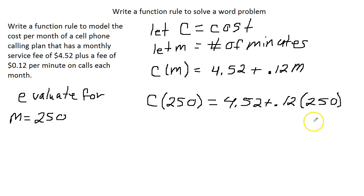All right, then we put it into our calculator, and we are going to get that C of 250 equals 34.52. Good. Now, if we would have had other digits, we would have to round because this is money.